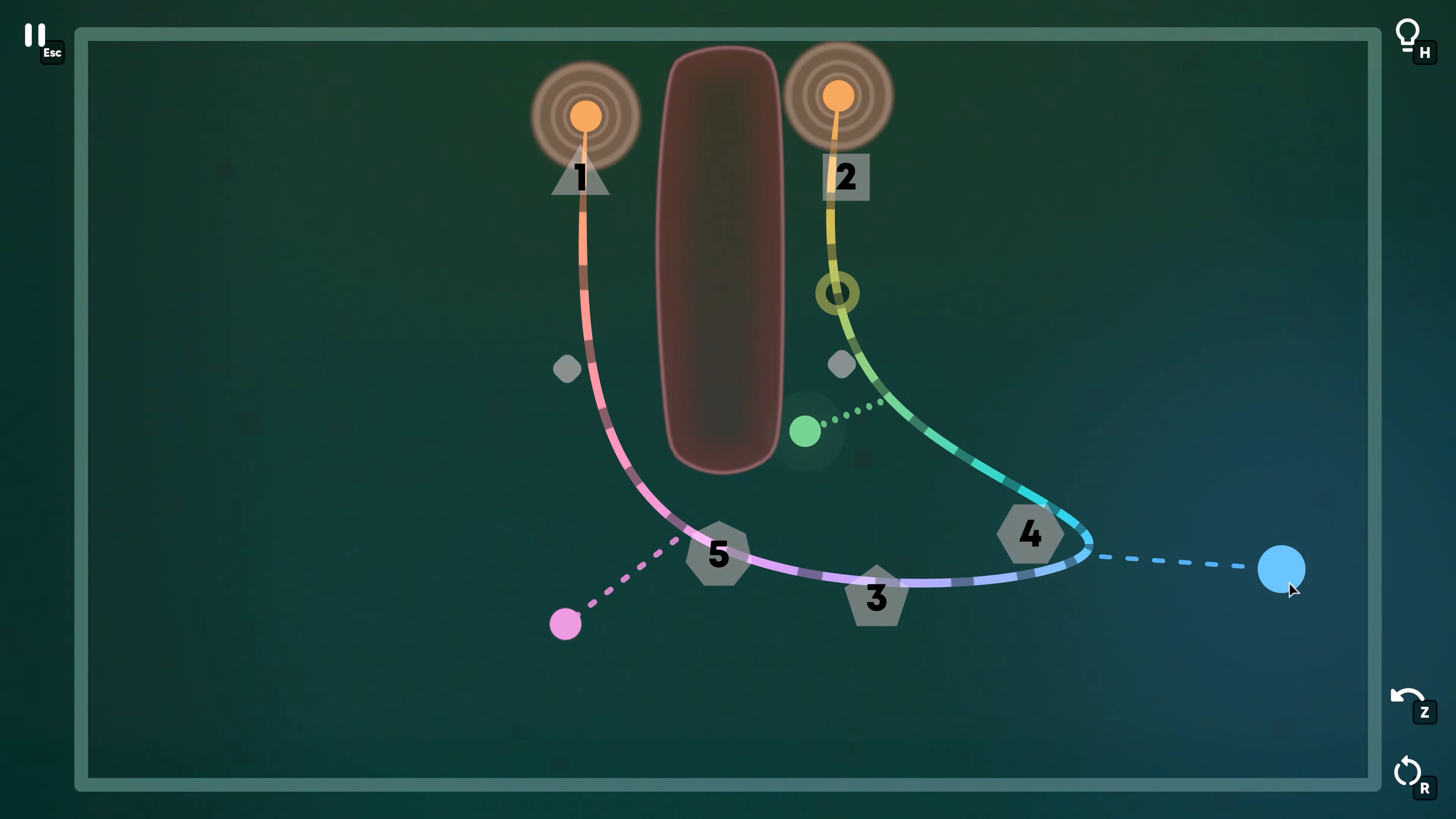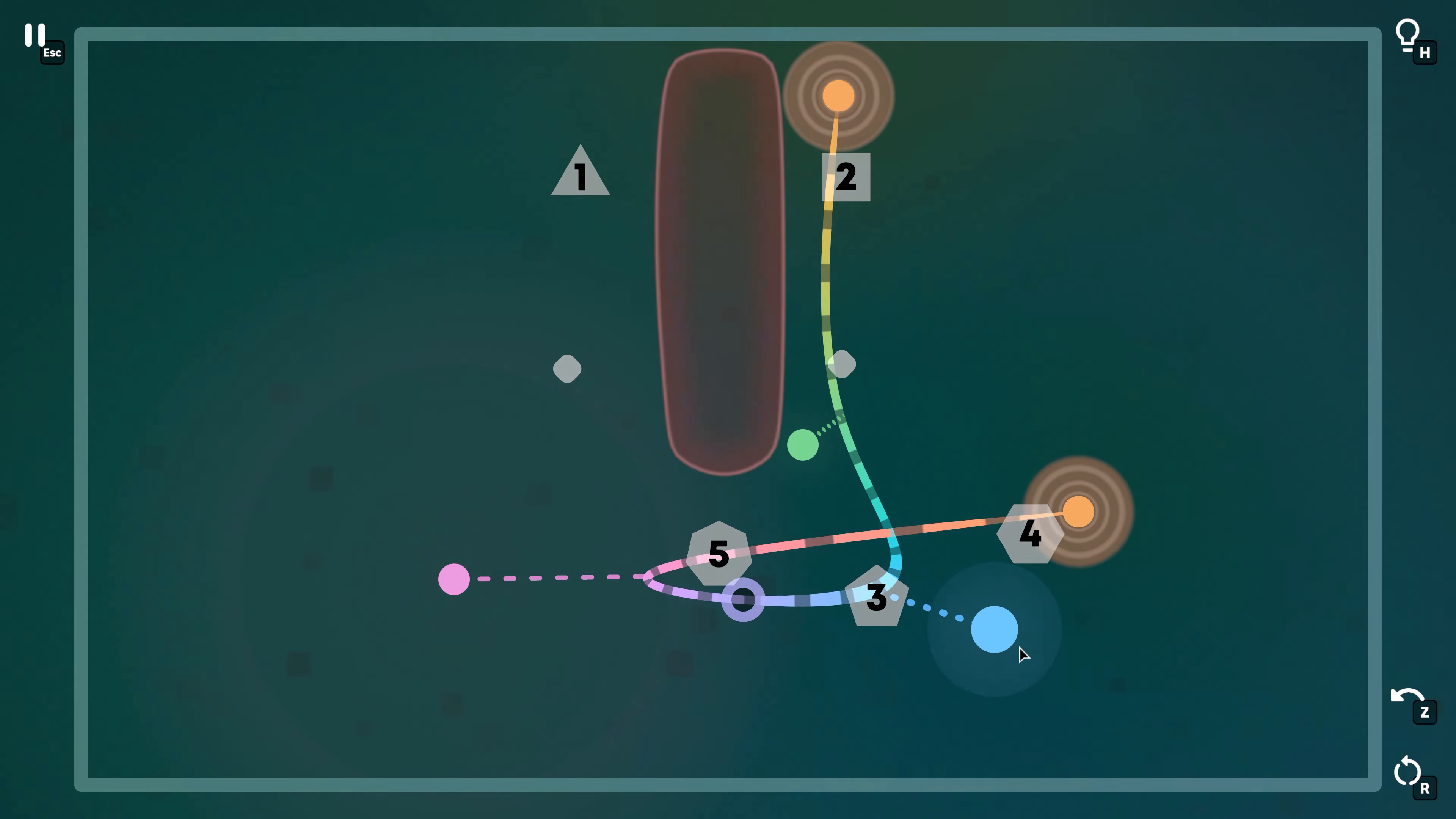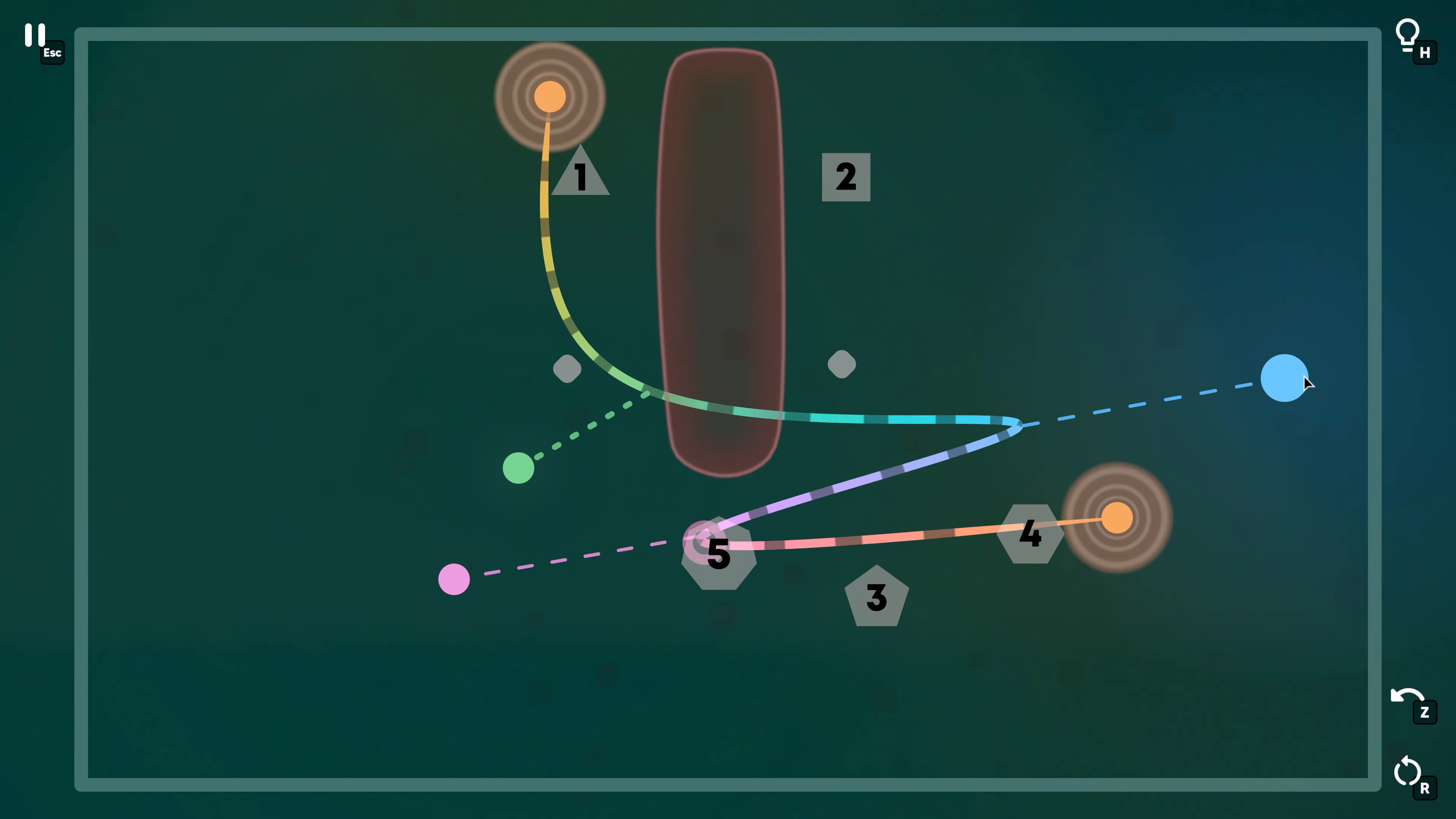One thing that I do think hurts Oros a bit is that the included hint system is a bit too forgiving. Essentially, it shows you what the completed puzzle looks like, and has no limits on how many times you can view it. I suppose one needs to practice restraint when utilizing hints, and the game doesn't outright solve things for you, but it does sometimes rob you of figuring out how you need to configure these lines to achieve victory.